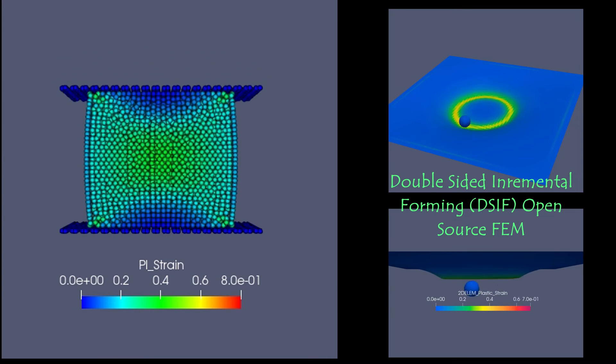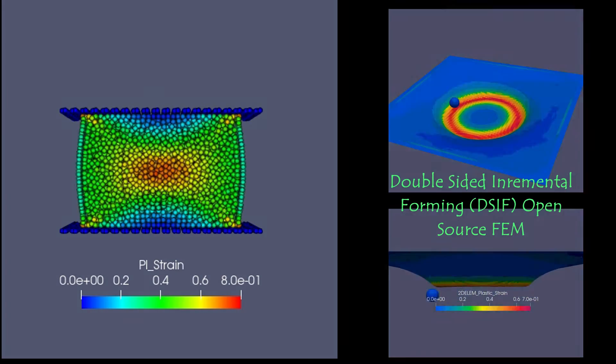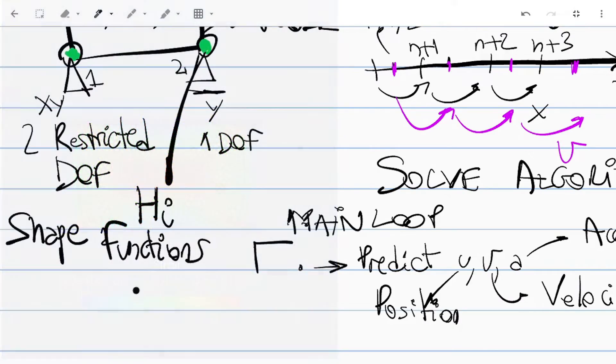They have the advantage of not assembling any stiffness matrix and hence use a lot less memory, allowing very large element counts.